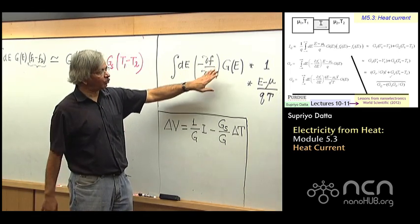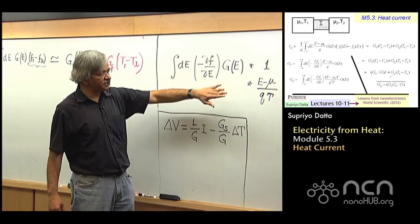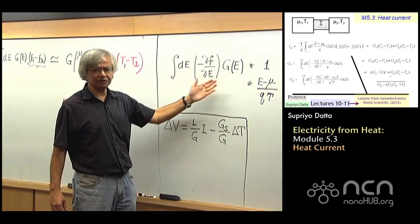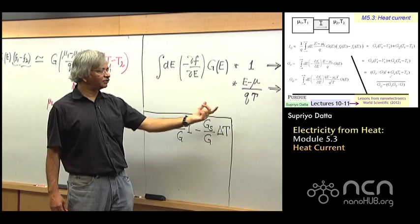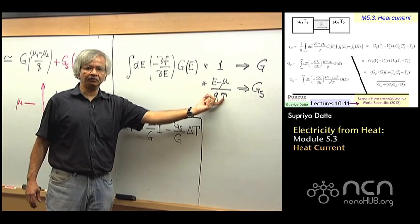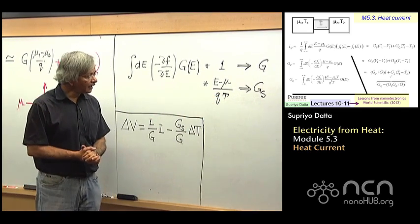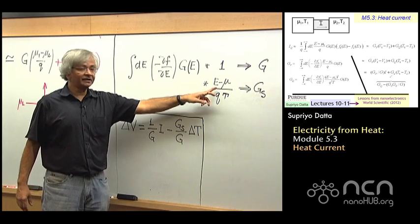And what we have seen is how g is obtained, this is something we did back in week one. And if you want gs, the expression looks much the same except that you have this additional factor there now, e minus mu over qt.